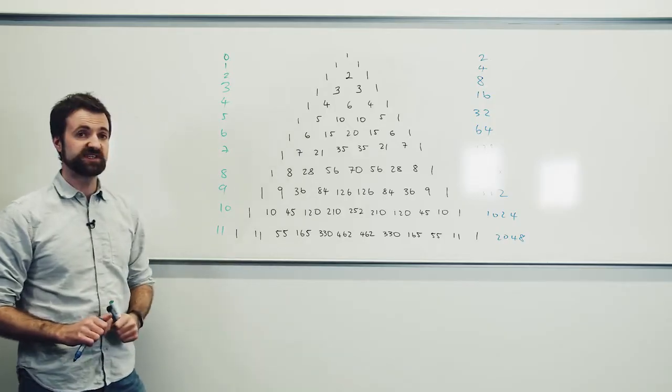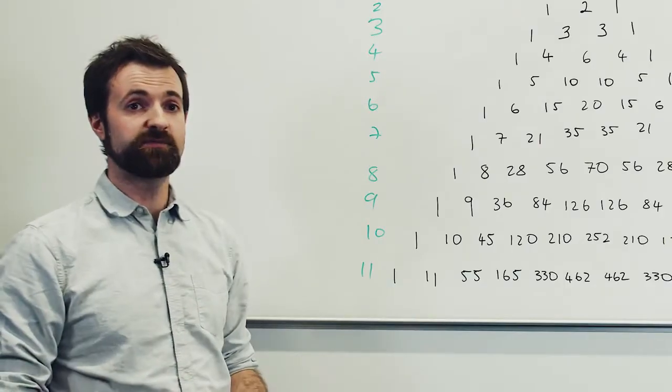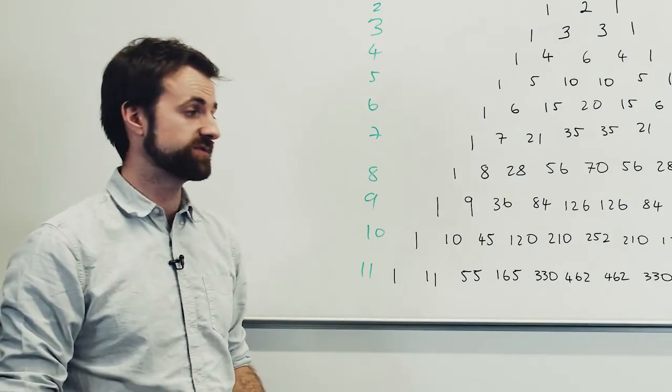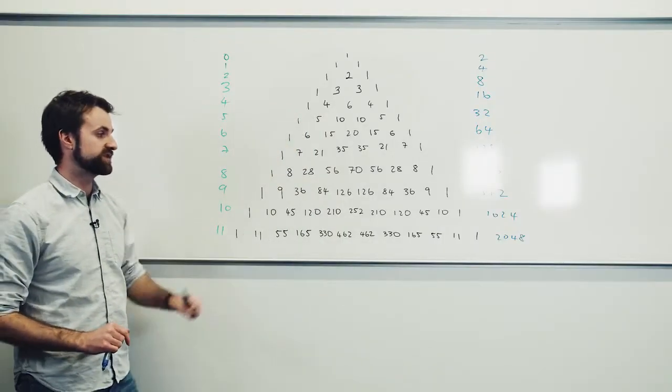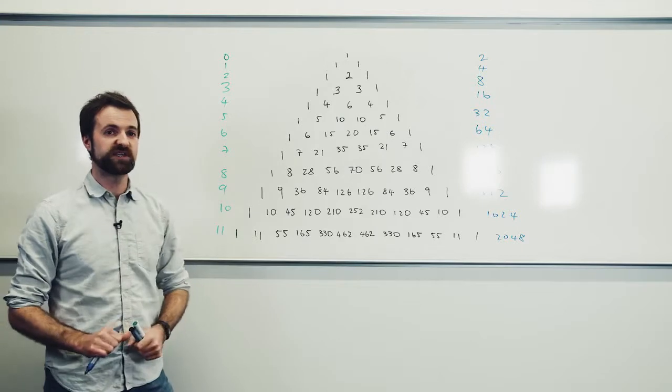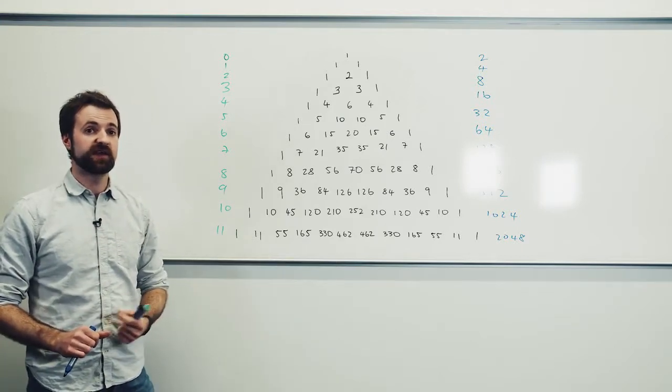I have to take the number of paths that I can use to get to that particular bin and divide by the total number of possible paths. For example, if I'm thinking of one of the middle two bins, there are four hundred and sixty-two different paths to get to that column, and I divide it by the total number of paths, which is two thousand and forty-eight, to find the probability that an individual ball will land in a given bin.